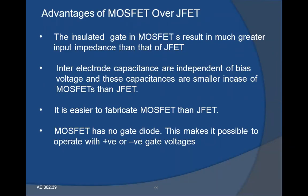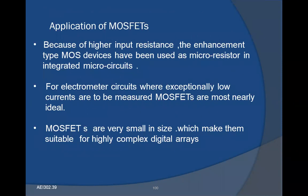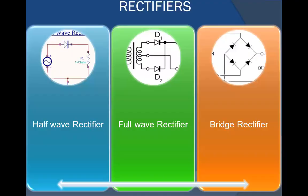Advantages of MOSFET over JFET: First, the insulated gate in MOSFET results in much greater input impedance than JFET. Second, inter-electrode capacitances are independent of bias voltage and smaller in MOSFET than in JFET. Third, it is easier to fabricate MOSFET than JFET. Fourth, MOSFET has no gate diode, making it possible to operate with positive or negative gate voltage. Because of higher input resistance, the enhancement type MOSFET can be used in micro-resistor integrated circuits and electrometer circuits where exceptionally low currents are to be measured. MOSFETs are very small in size, making them suitable for highly complex digital arrays.